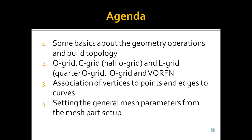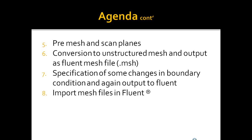Then we cover setting general mesh parameters from the mesh part setup, and I will show you the pre-mesh and the skin planes, and then conversion to the unstructured mesh for Fluent and output a mesh file for Fluent. Then we replace some boundary conditions and change some boundary conditions arbitrarily to give you a concept about how the different surface parts and the air blocking affect the boundary conditions. Finally, I will show you the mesh in Fluent and check the mesh quality using matrices like orthogonal quality.